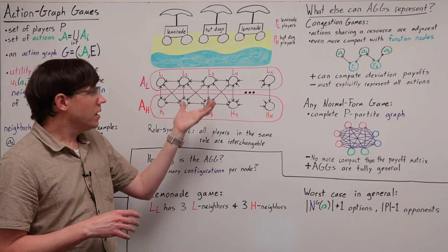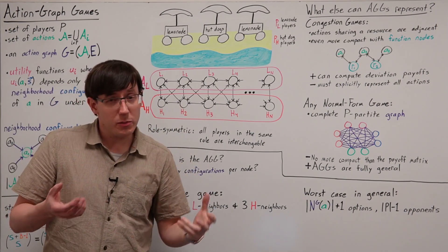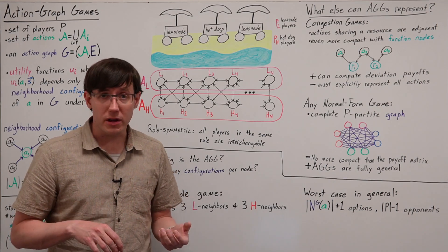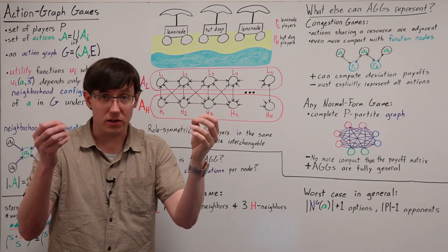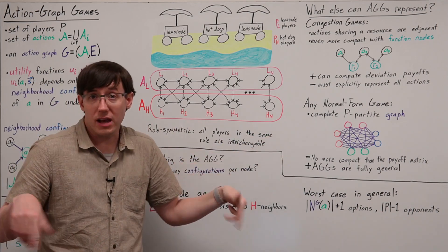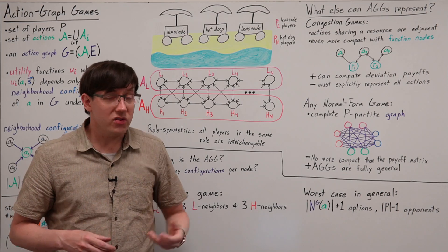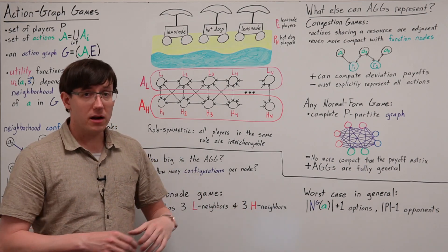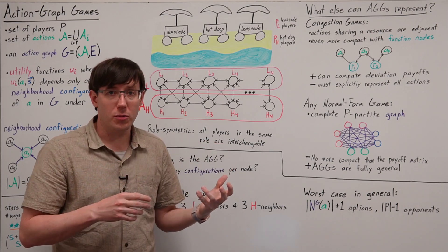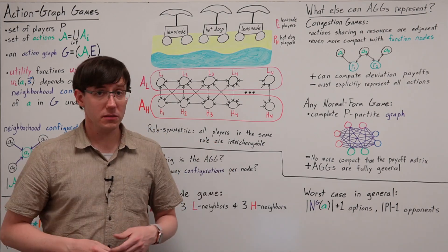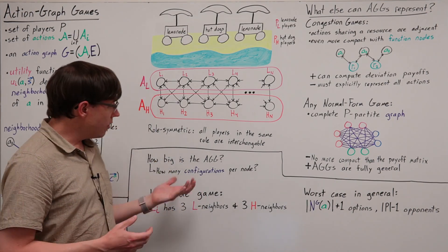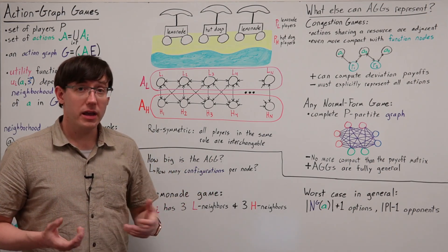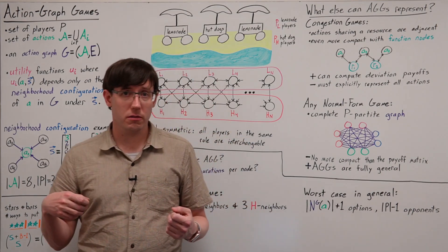One thing to note about this lemonade stand game is that it has some symmetry. It's not a fully symmetric game where all of the players are interchangeable, but the lemonade stand players all have identical incentives, and the hot dog stand players all have identical incentives. So we can call this a role-symmetric game, where there are two roles — the lemonade role and the hot dog role — and within each role all of the players are interchangeable. So if we think about how large a data structure we'll need to store for the action graph representation of this game, we can take advantage of that role symmetry in storing the configurations.